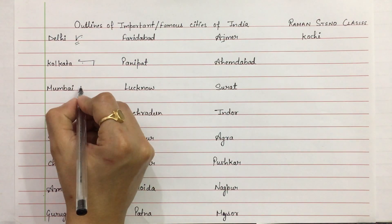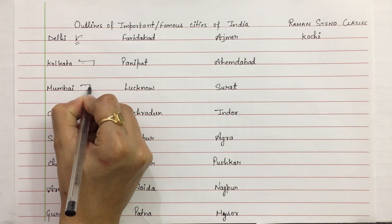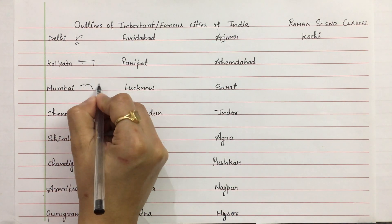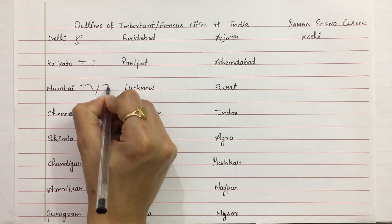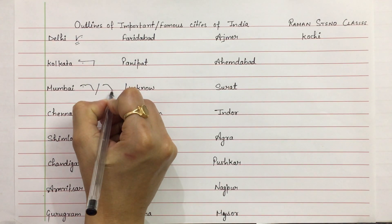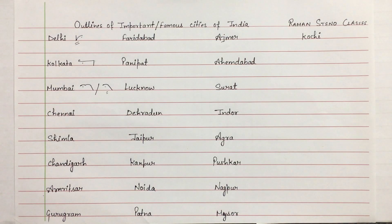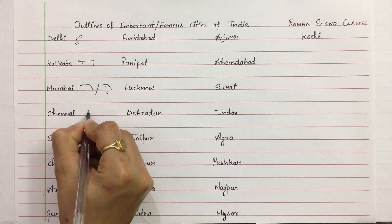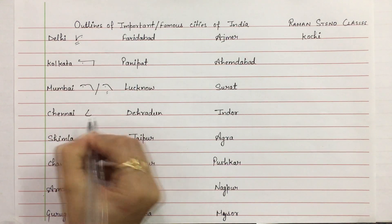Then Mumbai — you can write it this way, or you can also write one M of omission with Mumbai. Then Chennai, on the line: J and N — Chennai.